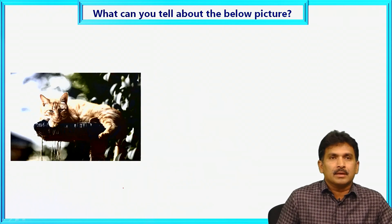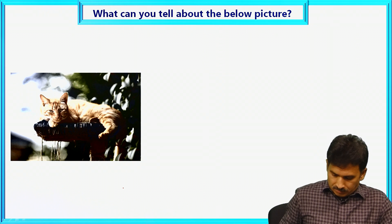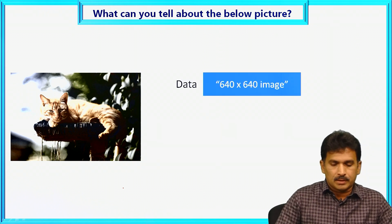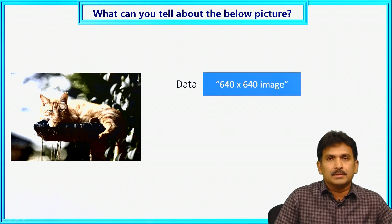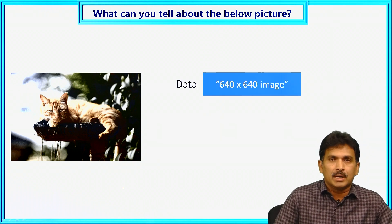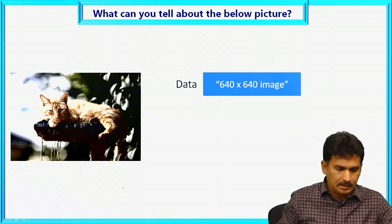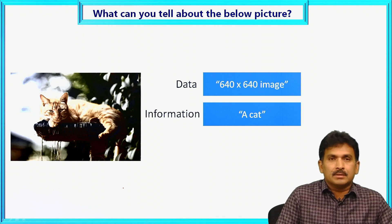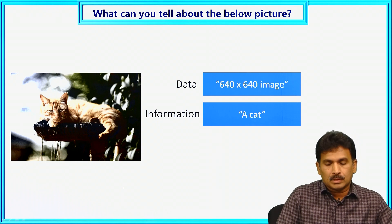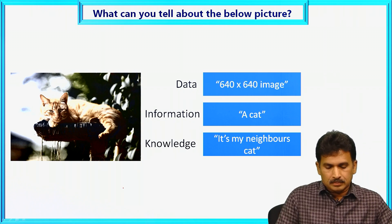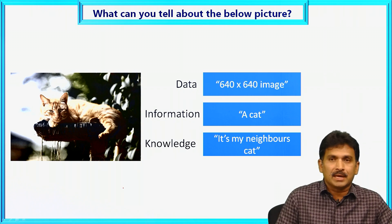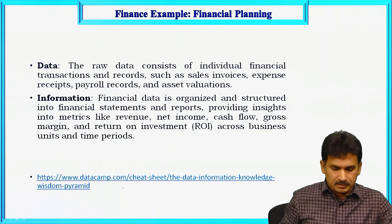If you look at this image — what can you tell about this picture? In terms of data, it is a 640 by 640 pixel image. The information related to this is that it is a cat. And the knowledge is that it is my neighbor's cat. This is a very simple example.